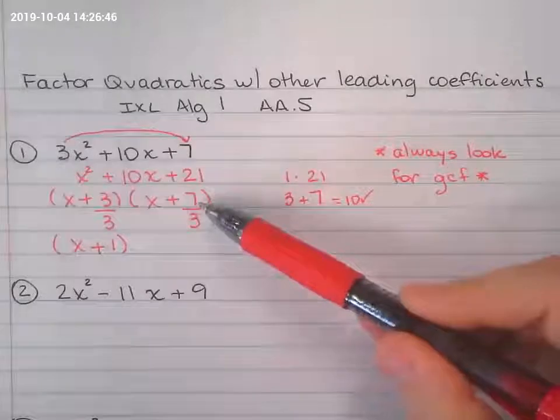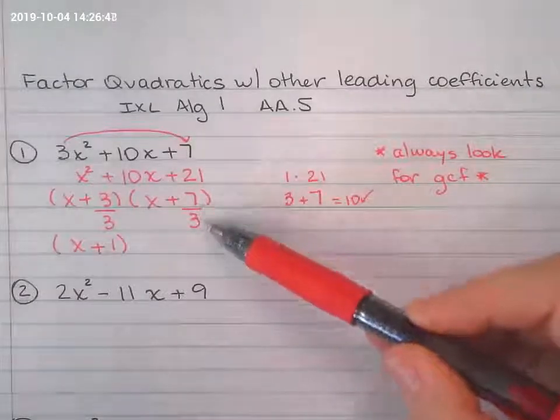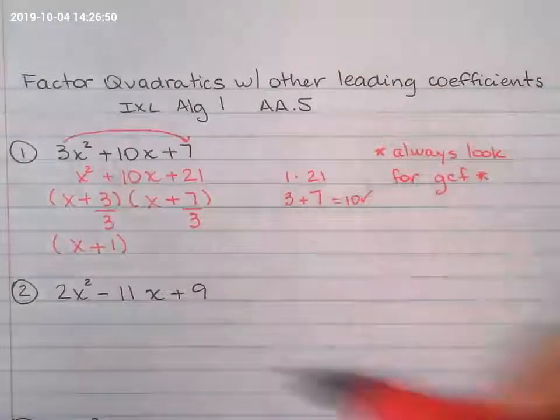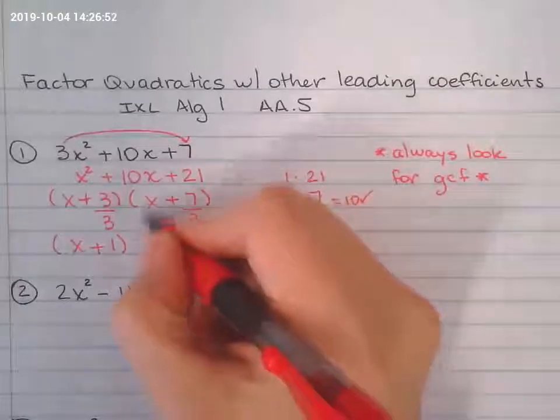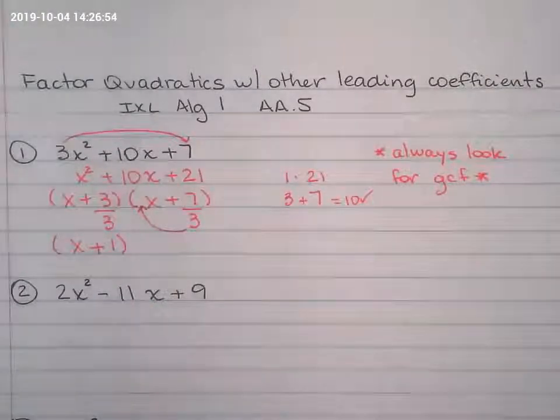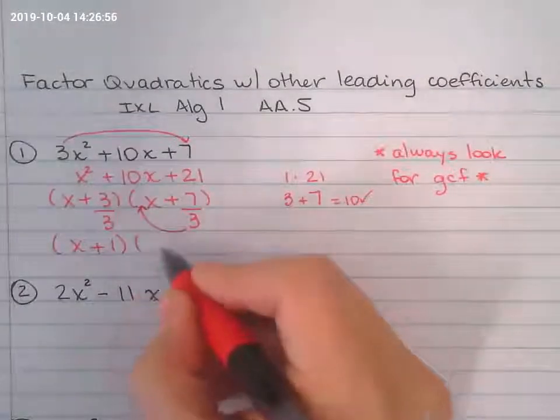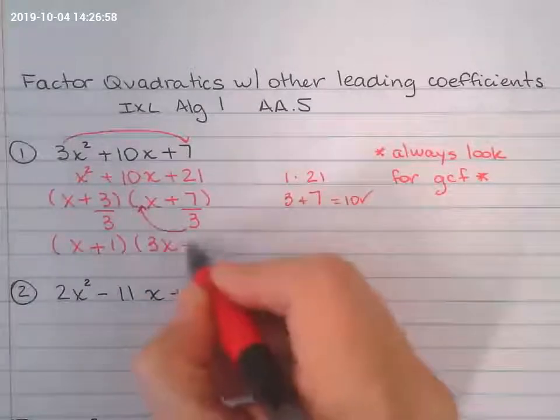Now, when we try to simplify this fraction, 7 over 3, we can't simplify any further than that. So we're going to get this 3, put it right there in the front, bring that 3 up. So 3x plus 7.